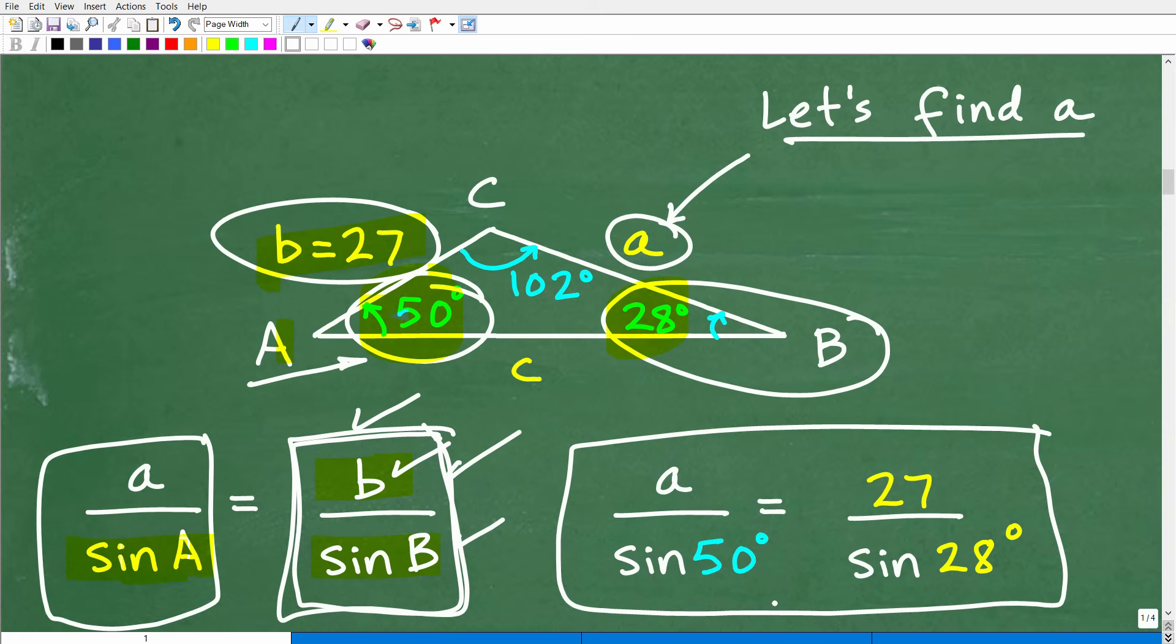And notice here, this is a nice little proportion. The only thing that I'm missing, I have sine of A, which is sine of 50. I have b, which is 27. I have sine of B, which is sine of 28. So the only thing I need to solve for is a. So I have one unknown. And this is basically the setup.